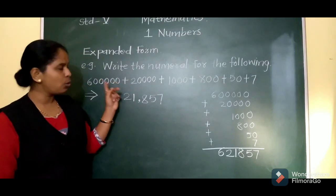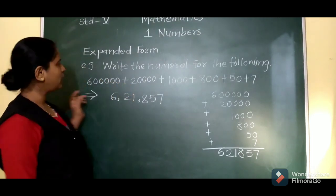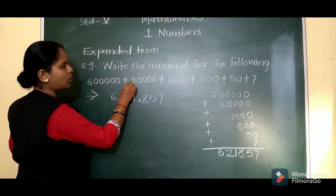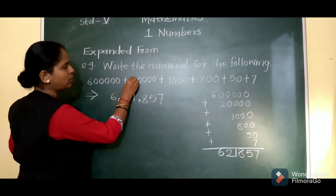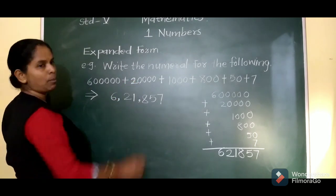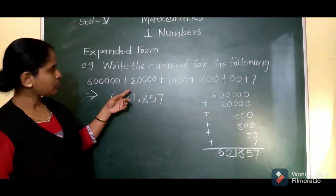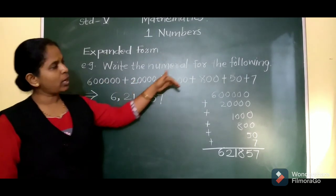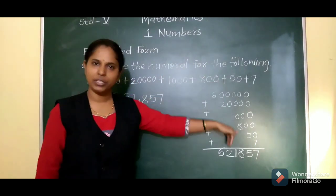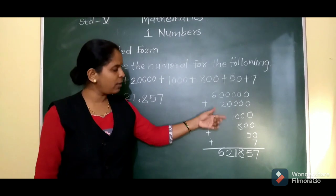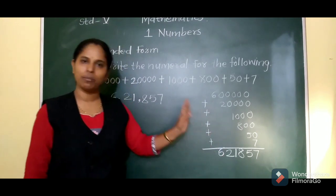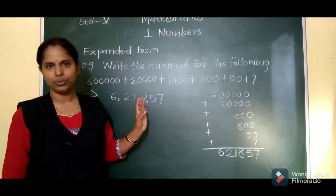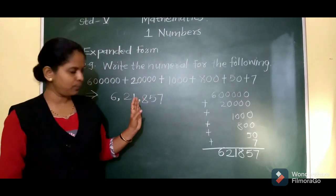If you don't understand how to write the numbers directly, you can arrange them vertically and find out the sum. Both ways you can do it.